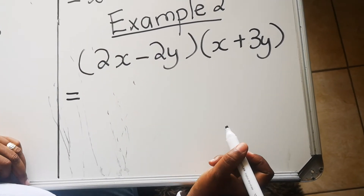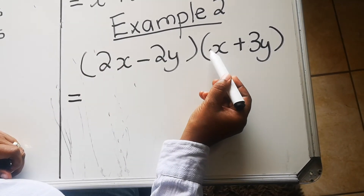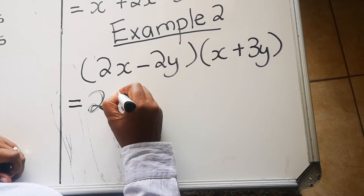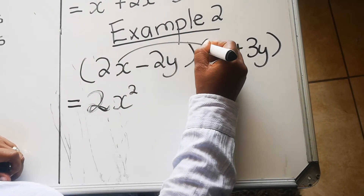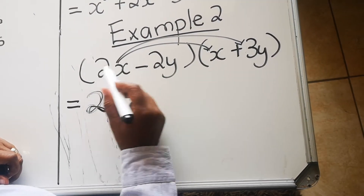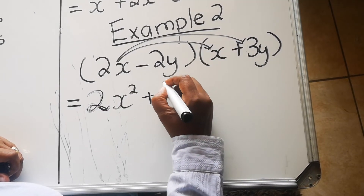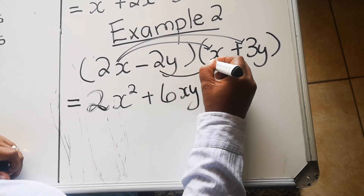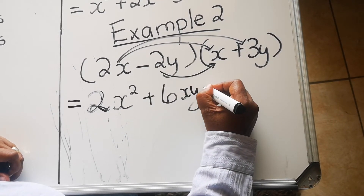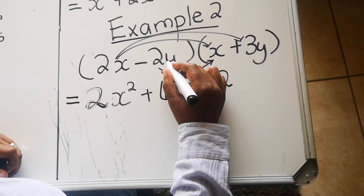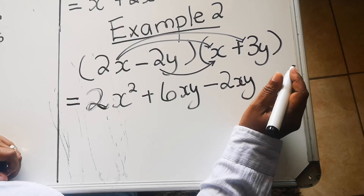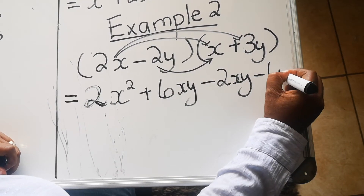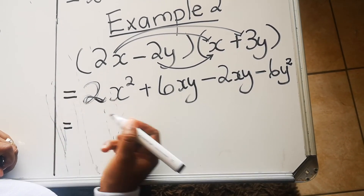Let's do example two. Start with the sign: positive times positive gives positive. Numbers: two times one gives two. Variables: x times x gives x squared. Then the next multiplication: positive times positive is positive. Two times three is six. x times y is xy. Next: negative times positive — not the same — is negative. Two times one is two. y times x is xy.